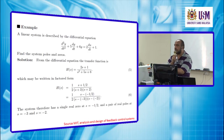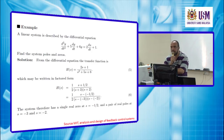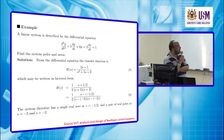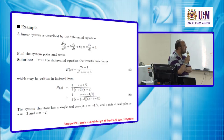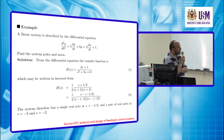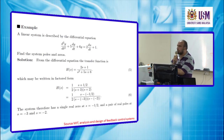Sometimes we have two identical poles when the solution yields, for example, (s − 3)(s − 3) — in this case we have two poles at the same point and same value. We also realize that the number of poles depends on the highest power of the equation. If the highest power is 2 we expect two poles; if the highest power is 3 we expect three poles, and so on.